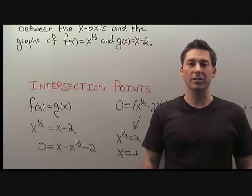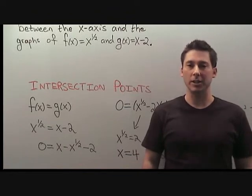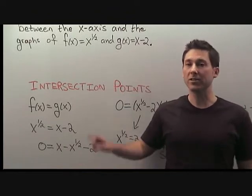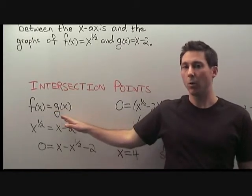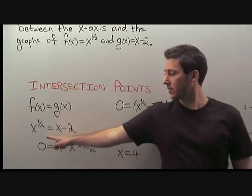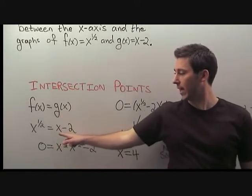We need to find the intersections of the graphs of f and g. What that means is we must solve this equation: f(x) equals g(x). That says x to the 1/2 is equal to x minus 2.